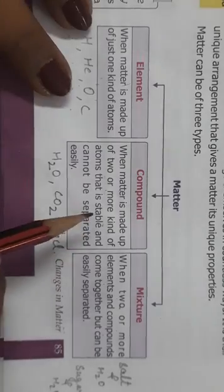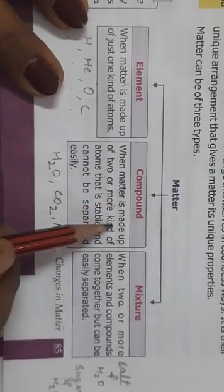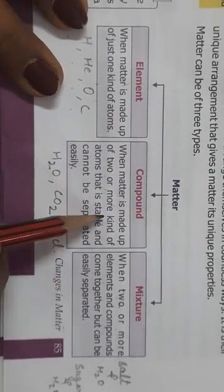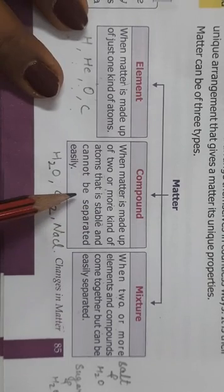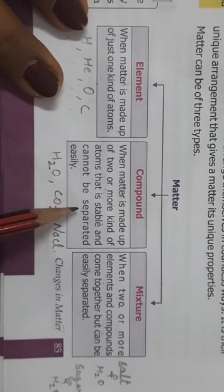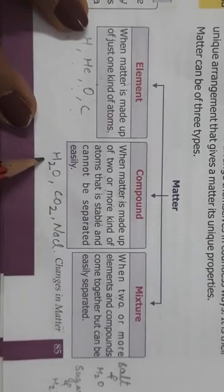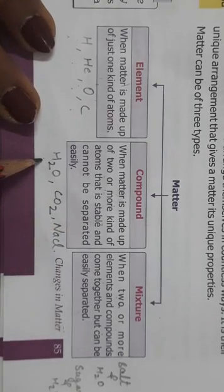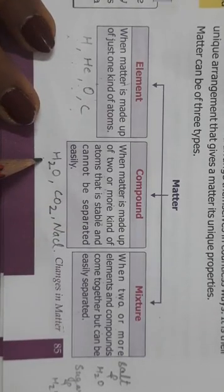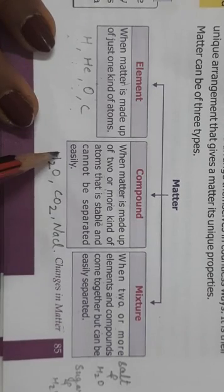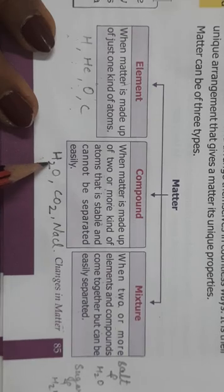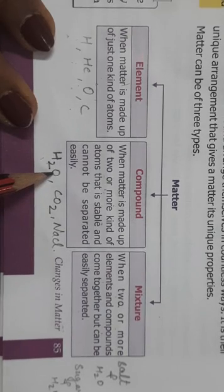Compound — what do you mean by compound? Compound means when matter is made up of two or more kinds of atoms, and they cannot be separated easily. For example, water — H₂O means water. You can see it is made up of two or more kinds of atoms: there are two atoms of hydrogen and one atom of oxygen.